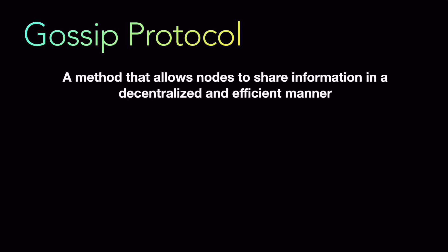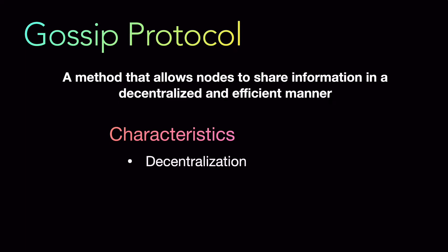So what is gossip protocol? Gossip protocol is a method that allows nodes to share information in a decentralized and efficient manner. Let's look at its key characteristics. First is decentralization — gossip protocol operates in a decentralized manner, meaning there is no central authority controlling the information flow. This makes the system more resilient to failures and also makes it scalable.